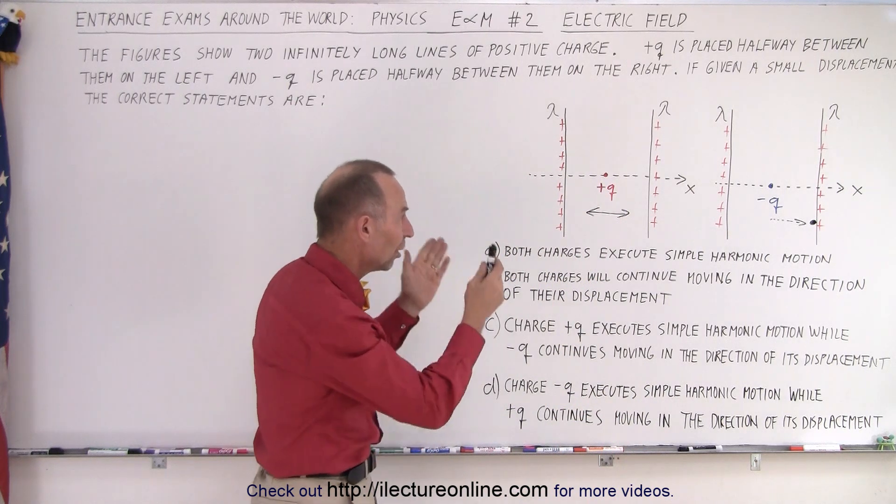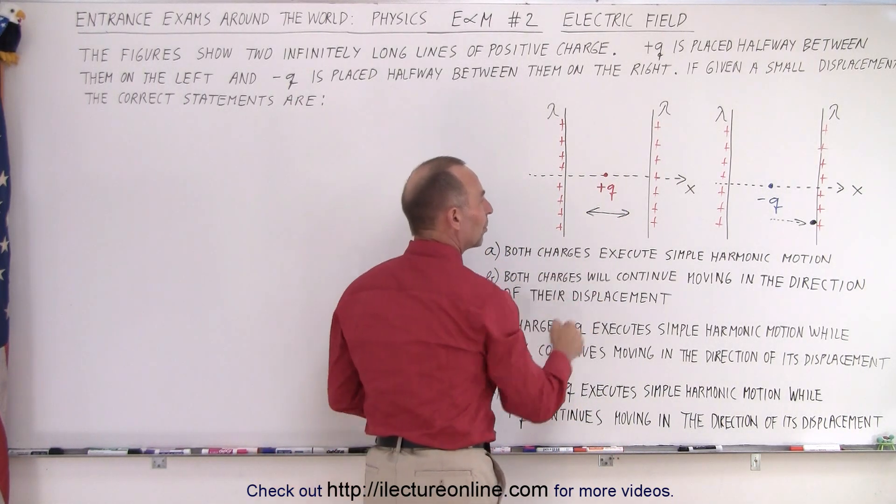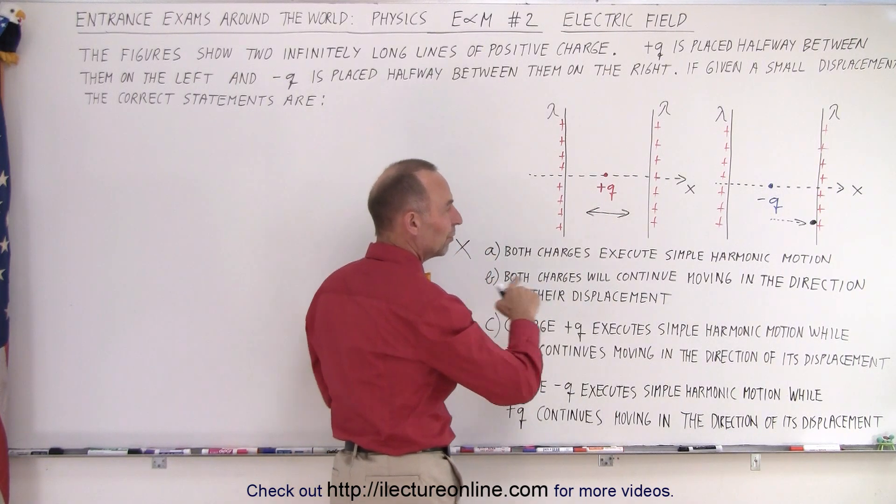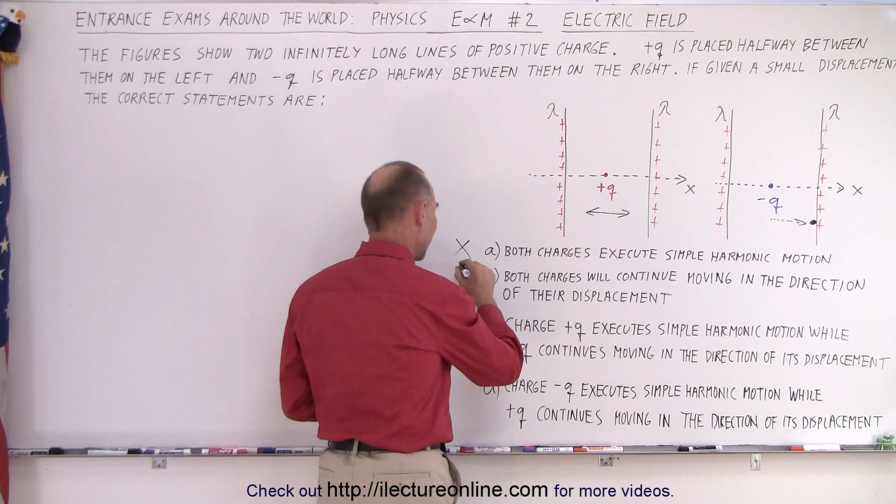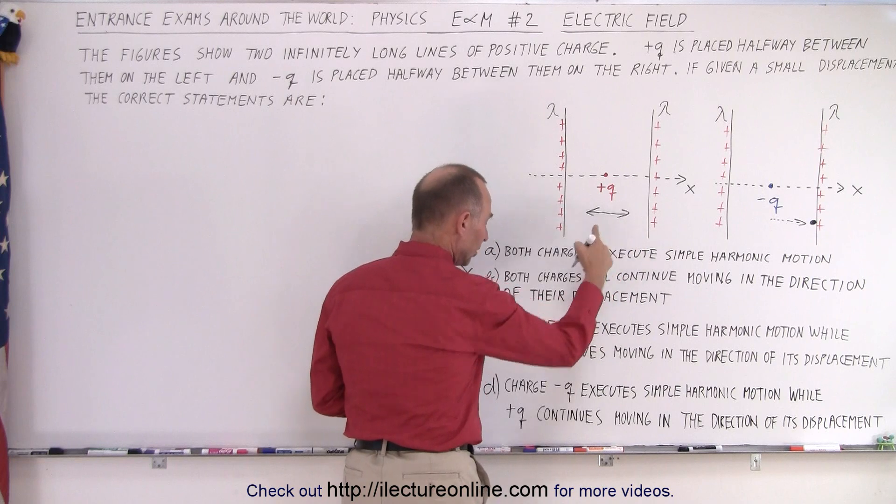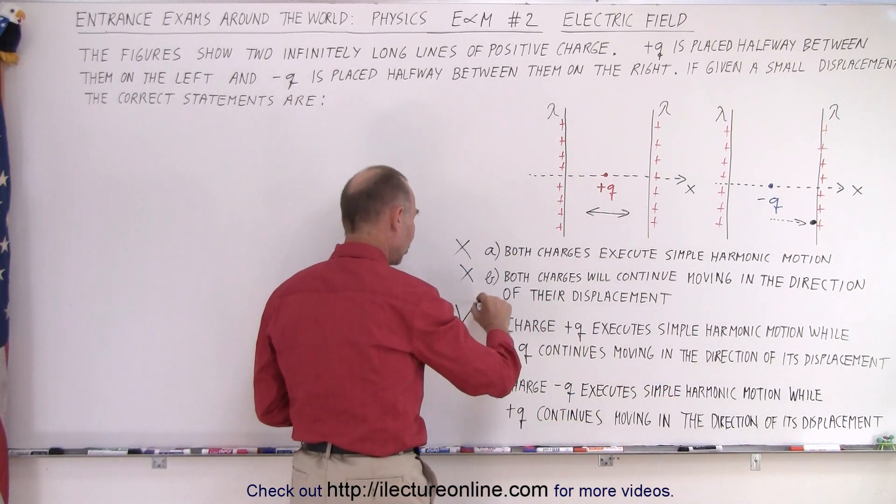So which of these four answers exhibits that response? Both charges execute simple harmonic motion - that is not correct. Both charges will continue moving in the direction of their displacement - that's not correct. Charge plus Q executes simple harmonic motion, and negative Q continues moving in the direction of displacement - that's correct.